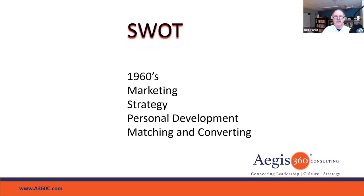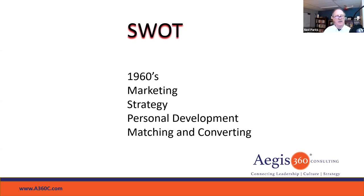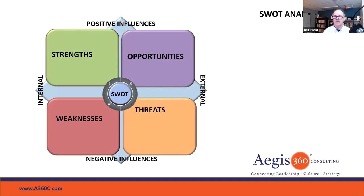I've seen SWOT used with departments, whole companies, with a product, or with a very specific line of business. For example, if I was in healthcare, I might wonder: should we be in the open heart surgery business? Let's do a SWOT analysis just on open heart surgeries as it applies to our setting and capabilities. There's really no limit to where you can use this. Are there other tools out there? Yes, but this one's been around a long time and we keep using it because it's frankly pretty good.